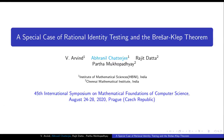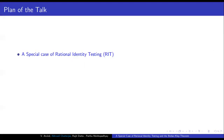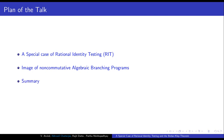Hi, myself Avranil Chatterjee. In this video, I am going to present my recent work: A Special Case of Rational Identity Testing and the Brasser-Cliff Theorem. This is a joint work with V. Irvin, Rajit Datta, and Partha Mohawad. In this talk, I will start by presenting the special case of Rational Identity Testing, or RIT, then focus on the image of non-commutative algebraic branching programs, and finish with a short summary.